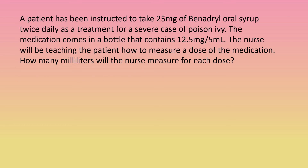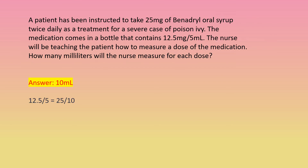A patient has been instructed to take 25 mg of Benadryl oral syrup twice daily as a treatment for a severe case of poison ivy. The medication comes in a bottle that contains 12.5 mg per 5 mL. The nurse will be teaching the patient how to measure a dose of the medication. How many milliliters will the nurse measure for each dose? Answer: 10 milliliters. Calculation: 12.5 mg per 5 mL; for 25 mg: 25 divided by 12.5 times 5 equals 10 mL.